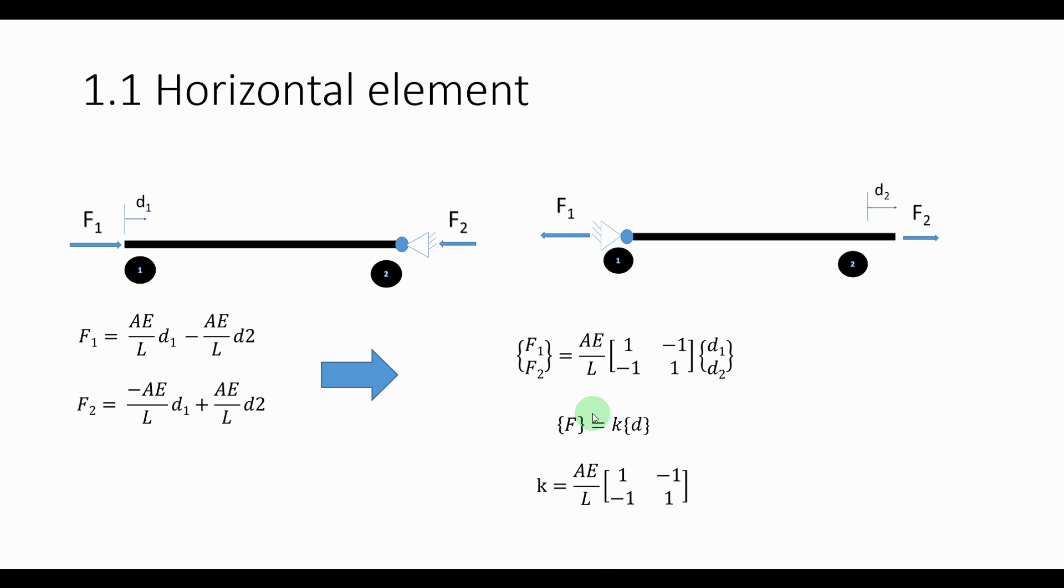And from there you can see that K equals AE over L times the matrix 1, minus 1, minus 1, 1.